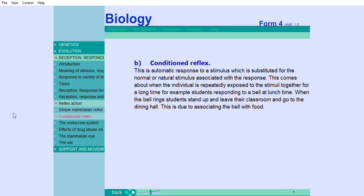Conditioned reflex: This is an automatic response to a stimulus which is substituted for the normal or natural stimulus associated with the response. This comes about when the individual is repeatedly exposed to the stimuli together for a long time.